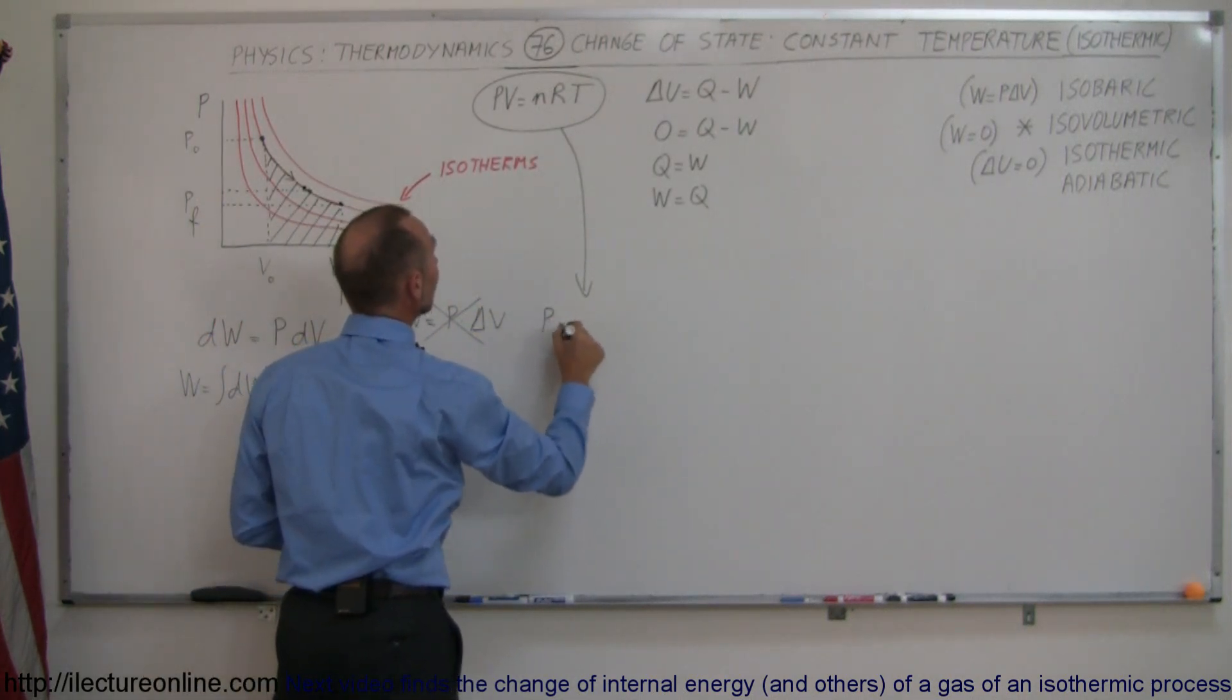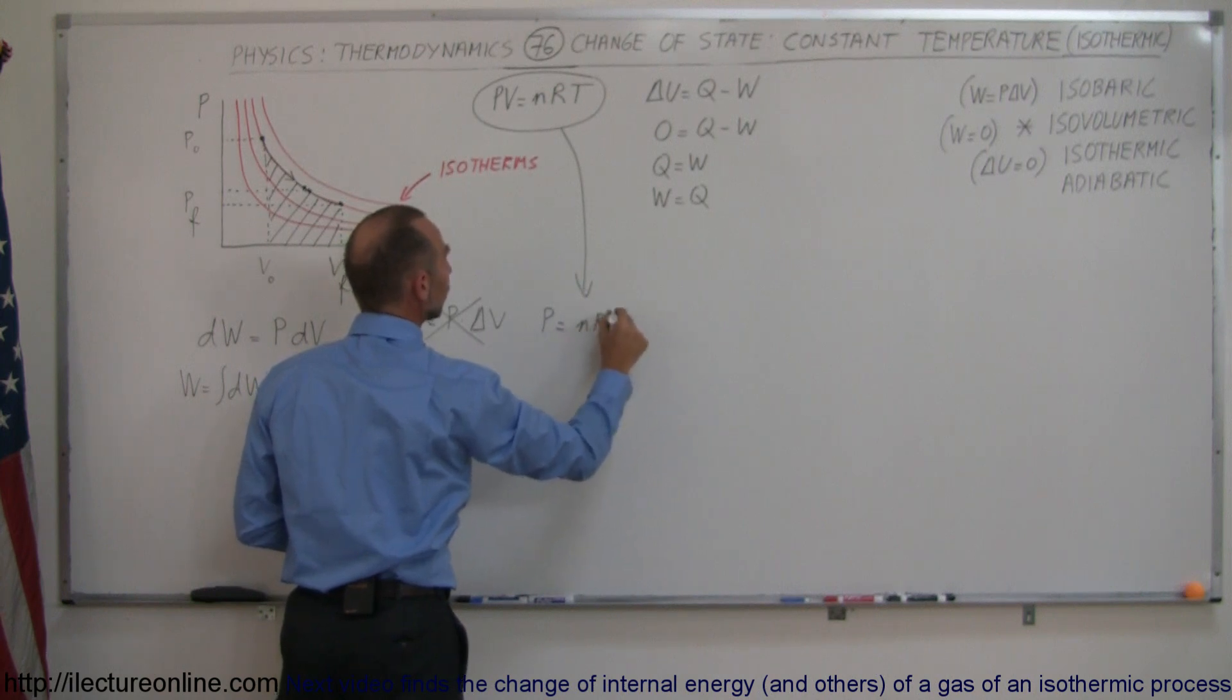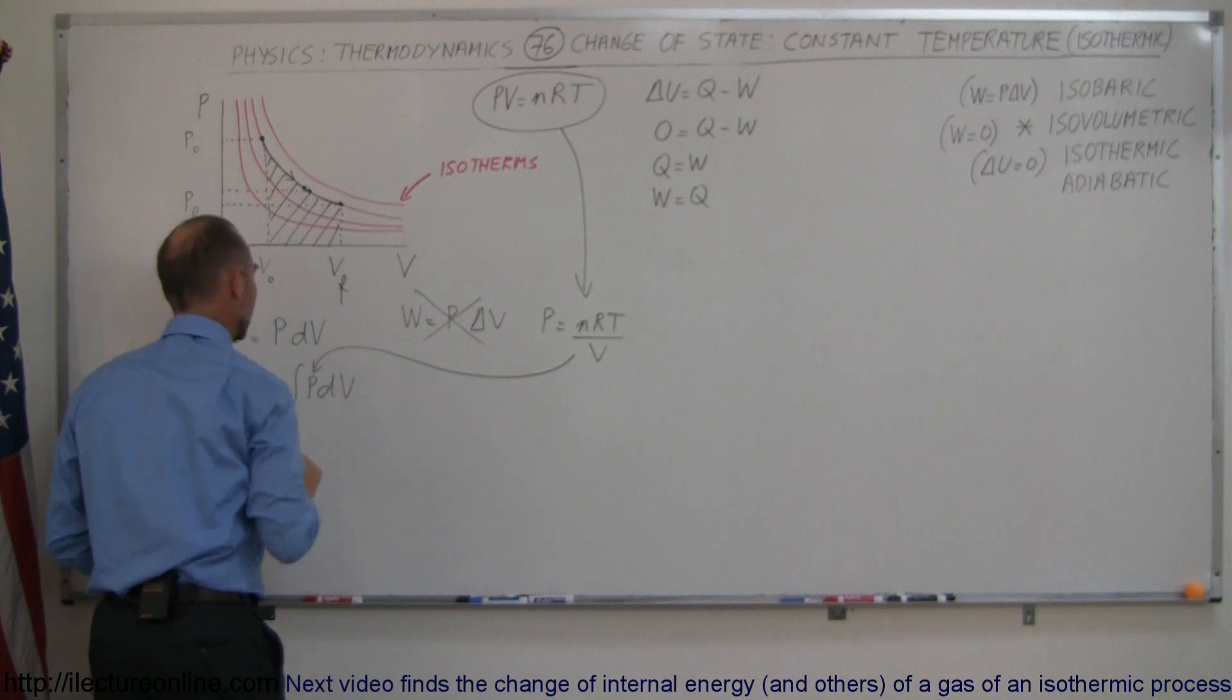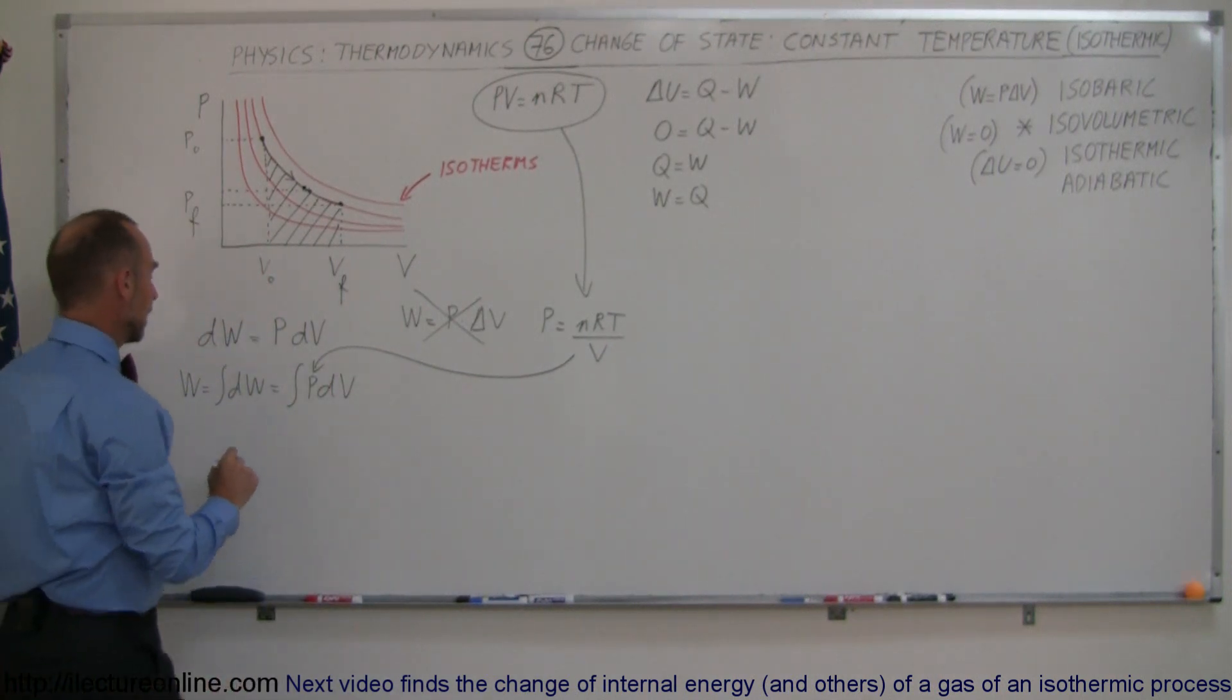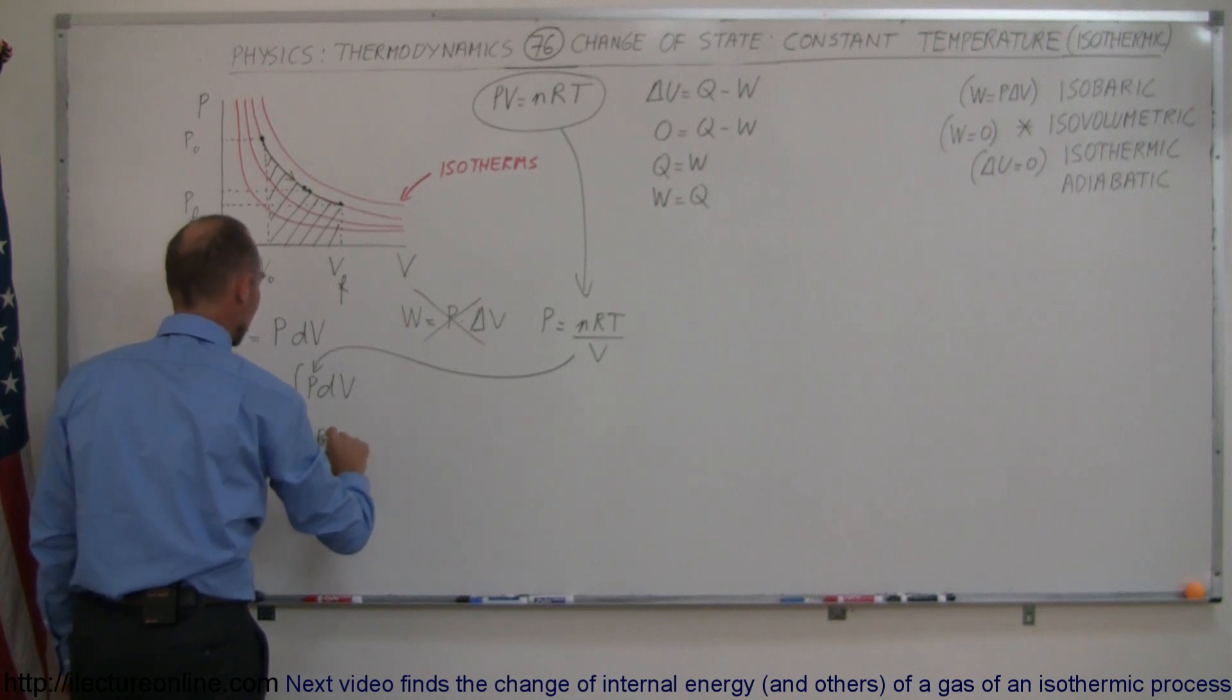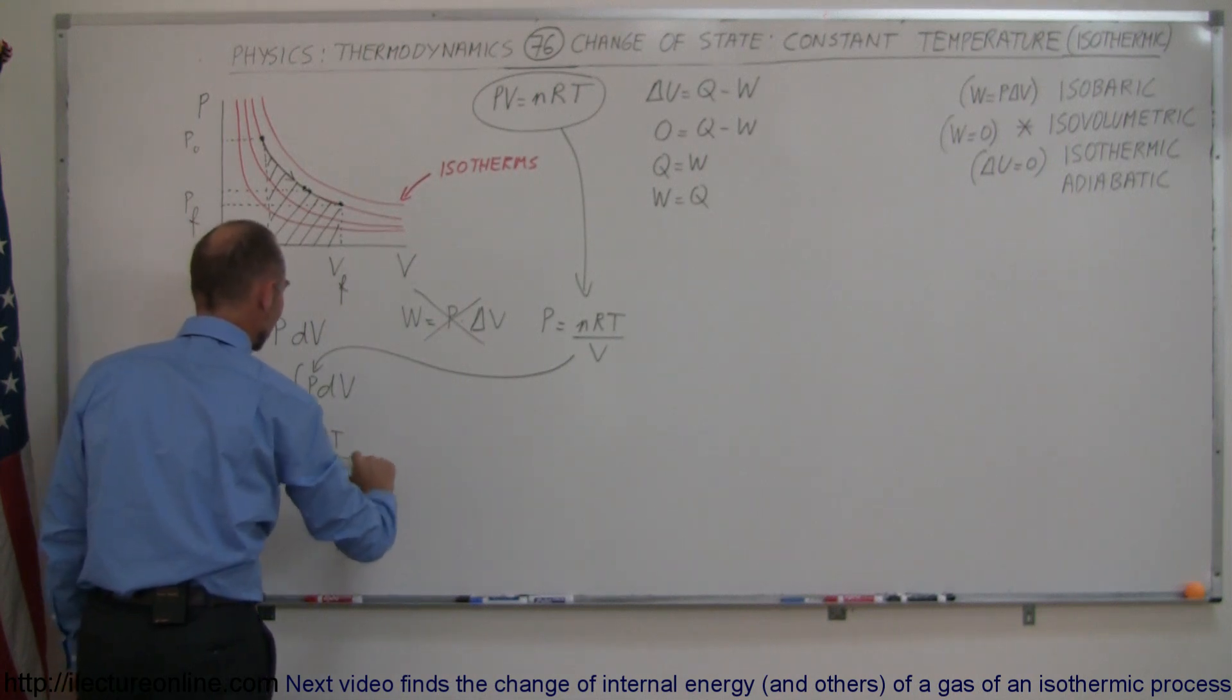So here we can say that p is equal to nRT divided by v, and plug that into our integral right there. We can plug that right into the p, and so this is equal to integral of nRT over v times dV.